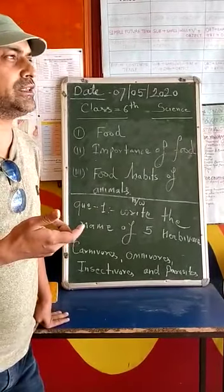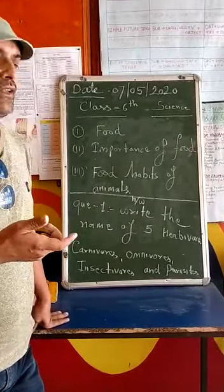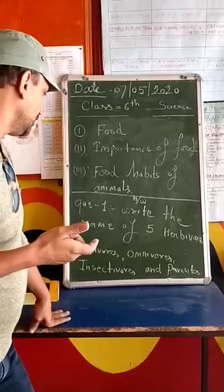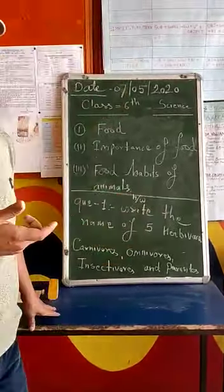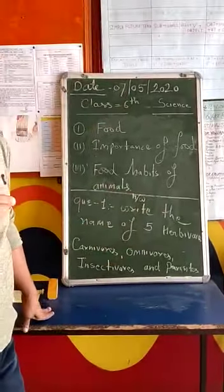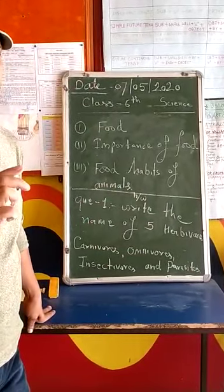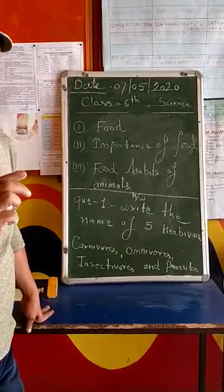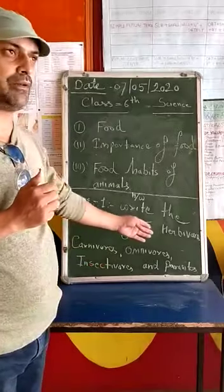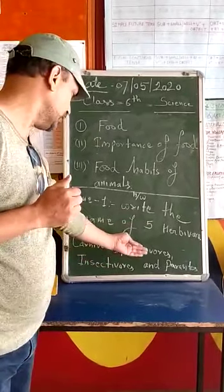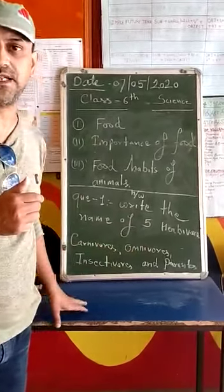We have a lot of examples of these types of animals. Your question is: please make a list of 5 animals for each of the following modes — Herbivorous, Carnivorous, Omnivorous, Insectivorous, and Parasites.